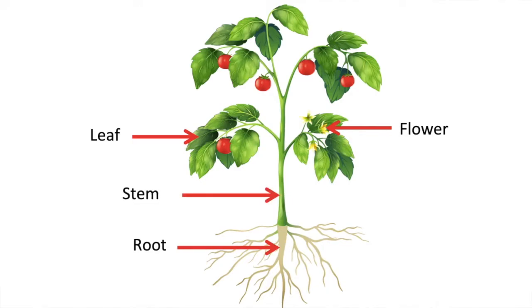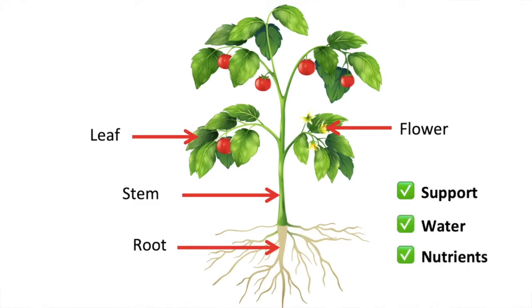Stem. The stem of a plant provides support and helps to keep the plant upright. This is important because plants need to stay upright in order to absorb sunlight. The stem is also required for nutrition of the plant, as it transports the water and nutrients from the root to the leaves and flowers.